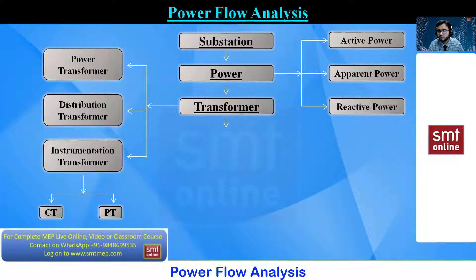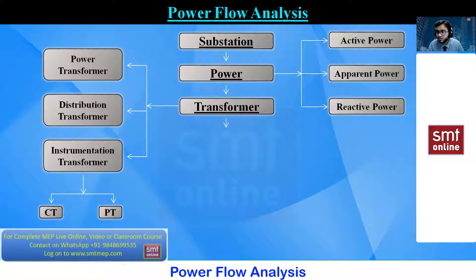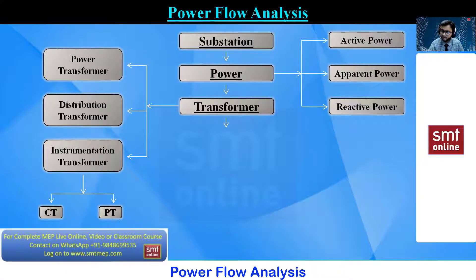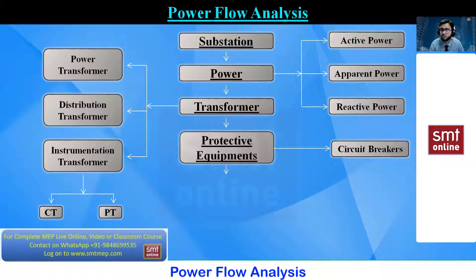Distribution transformers are the ones you can see on roads, providing supply to your building. Instrumentation transformers help you measure the amount of current and voltage. Within instrumentation transformers, we have the current transformer (CT) and the potential transformer (PT). After the transformer, we get the supply to the protective equipment like circuit breakers.